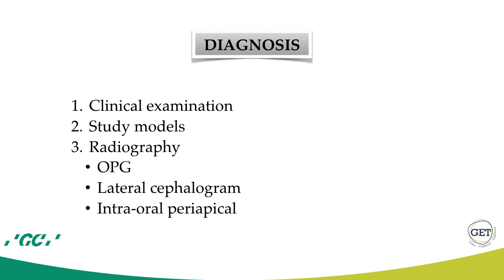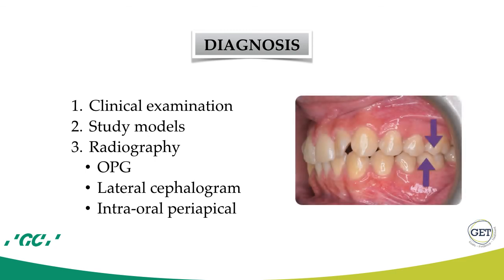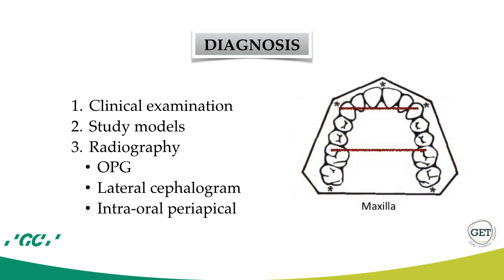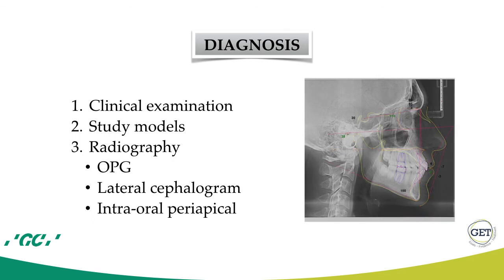For the diagnosis of a Class 1 malocclusion, three main orthodontic records are needed: a clinical examination by the orthodontist to check the dental malocclusion type and general oral health; study models on which model analyses such as Bolton or Howes analysis can be performed; and radiographs to diagnose the sagittal skeletal malocclusion or any impacted tooth or tooth agenesis.